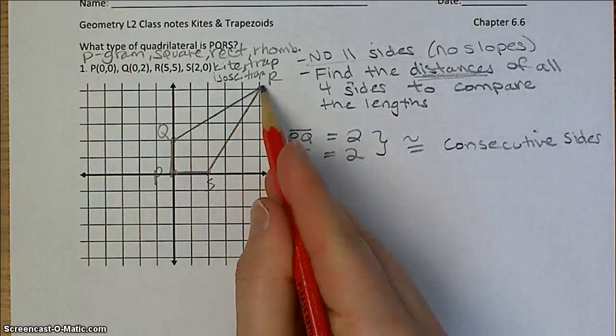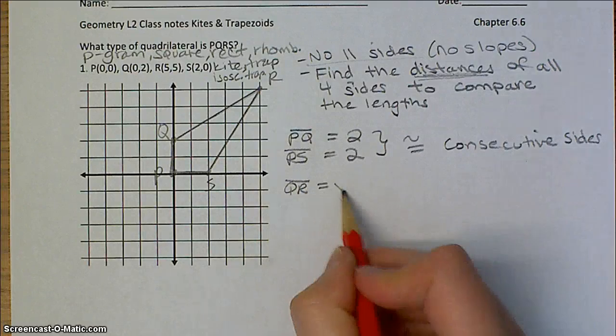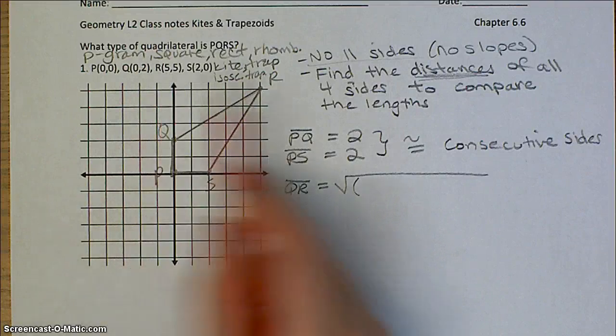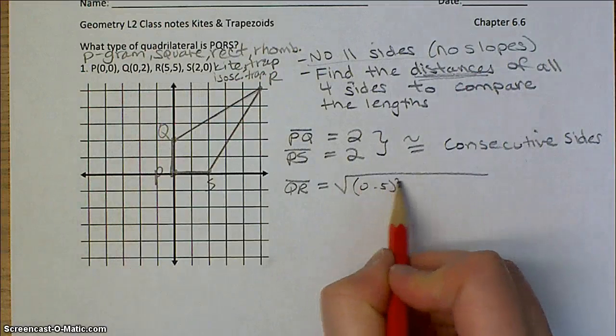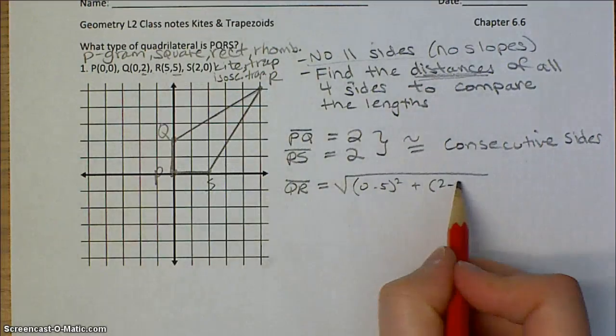And now I'm going to do the same thing for QR and RS. But now I need to use my distance formula. Q 0 minus 5, and then 2 minus 5.